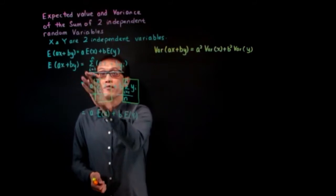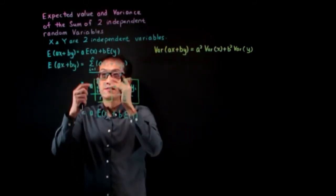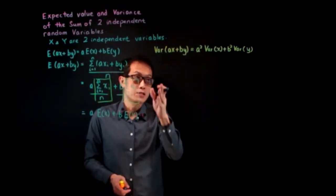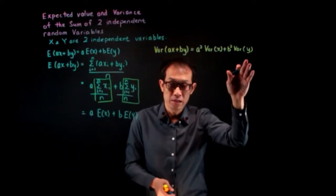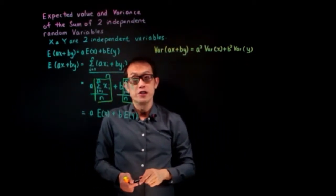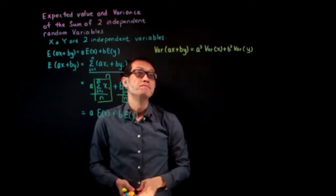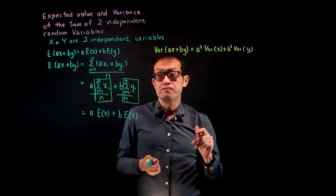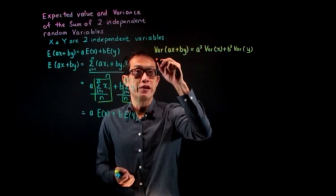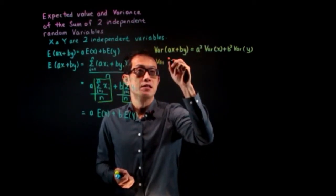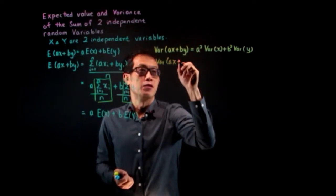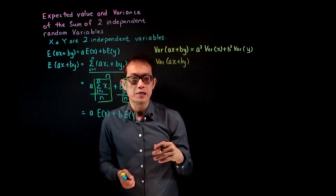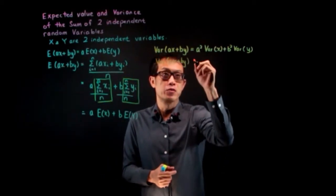I have now proven the formula in blue. Let's move on to the formula in orange-yellow. There is a formula for variance, and it can be rewritten in terms of expected value.